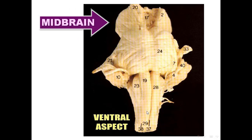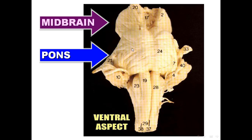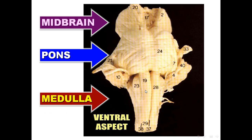This is the ventral aspect of the brain stem: midbrain, pons, and medulla. Medulla: three elevations — pyramid, olive, inferior cerebellar peduncle; three fissures — median fissure, pre-olivary fissure, post-olivary fissure. Pons: basilar groove, transverse pontine fibers, middle cerebellar peduncle. Cranial nerves: facial nerve, vestibulocochlear nerve, and cerebellopontine angle; trigeminal nerve; abducent nerve. Midbrain: crus cerebri or cerebral peduncle.